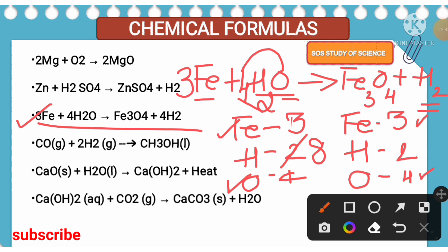Now it is time to balance the hydrogen in the product side as well. There are two atoms of hydrogen in the product side and you need eight. Two fours are eight, so write four in front of hydrogen so that you get eight atoms of hydrogen in the product side as well. I think dear students, you are getting the clear idea of how to balance the equation. This is the trial and error method. By looking at these two equations, you can balance any chemical equation which will be given in the exam.